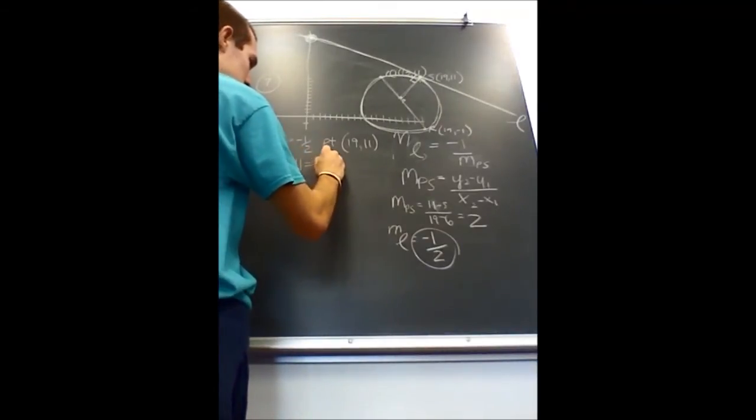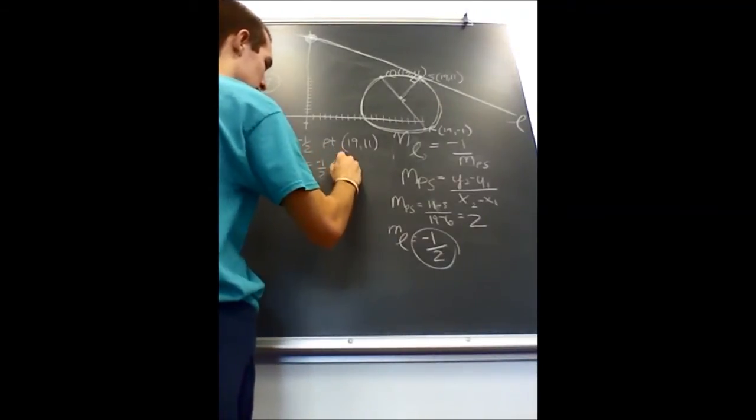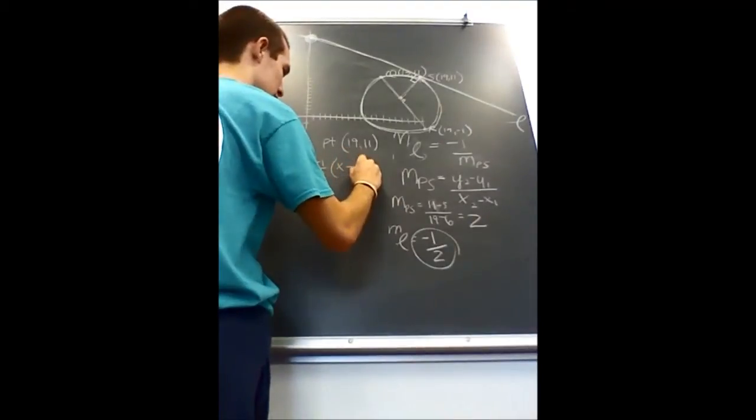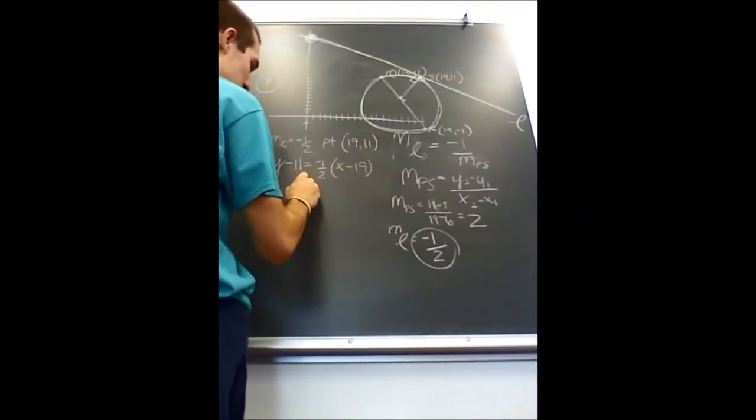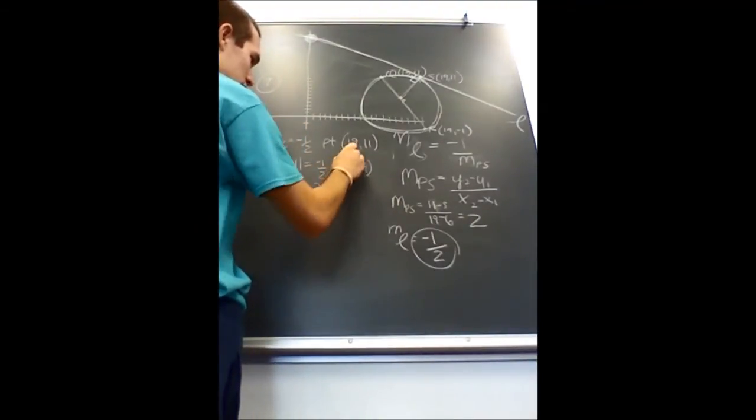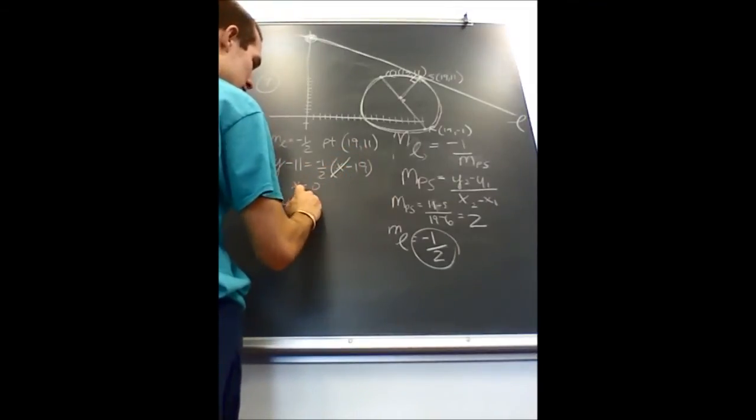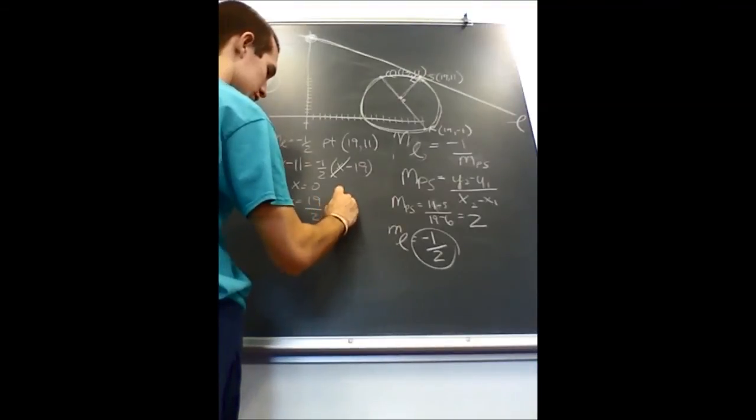Y minus 11 is equal to negative 1 half times x minus 19. And we want to find when x is 0, so then that means y is equal to 19 over 2 plus 11 over 1.